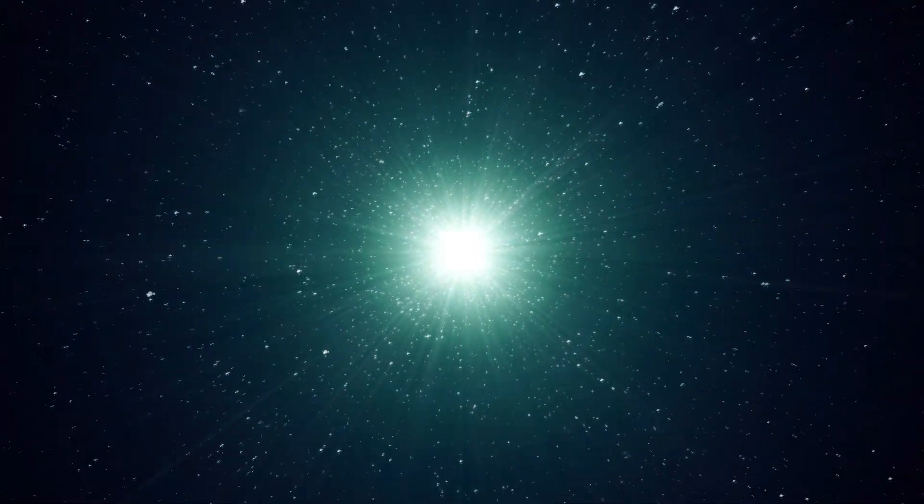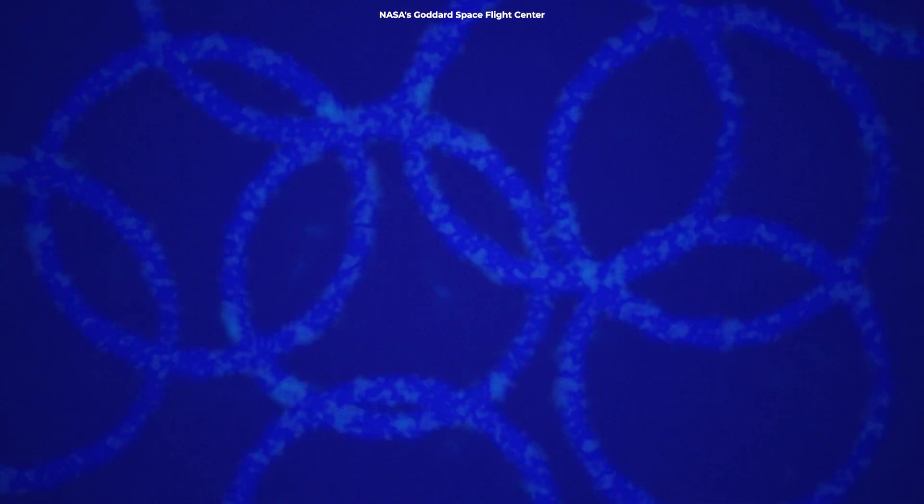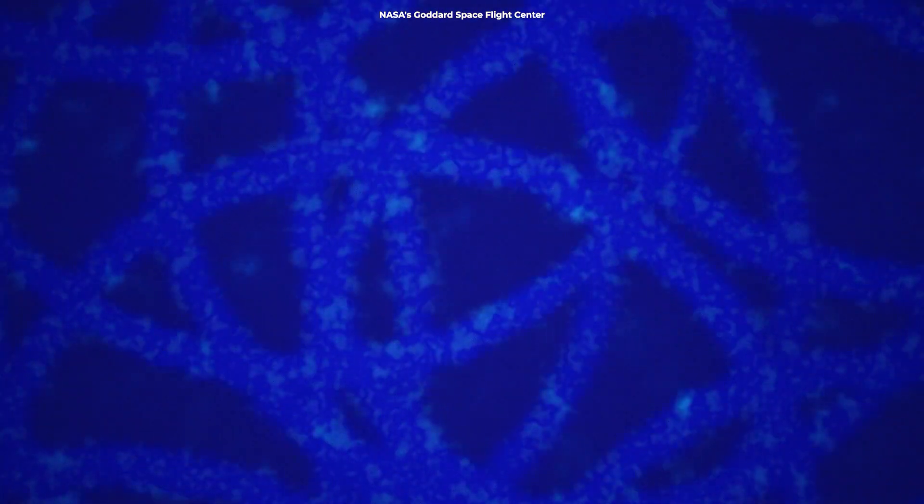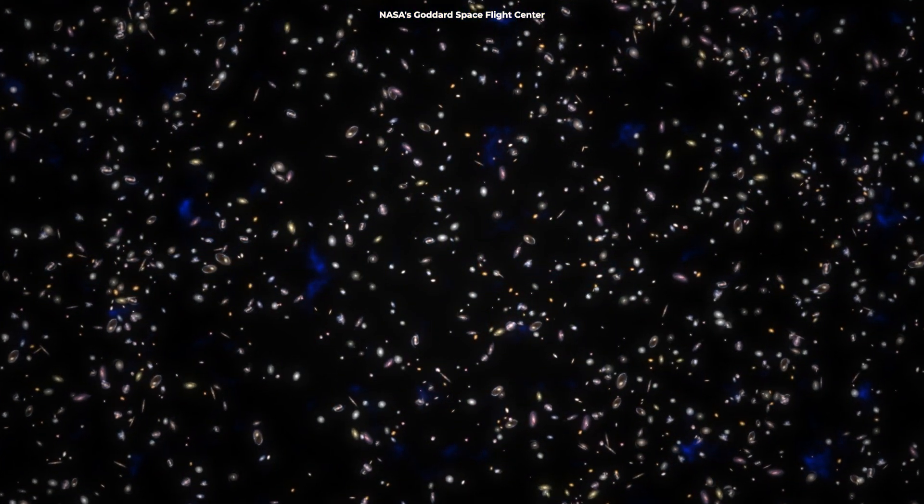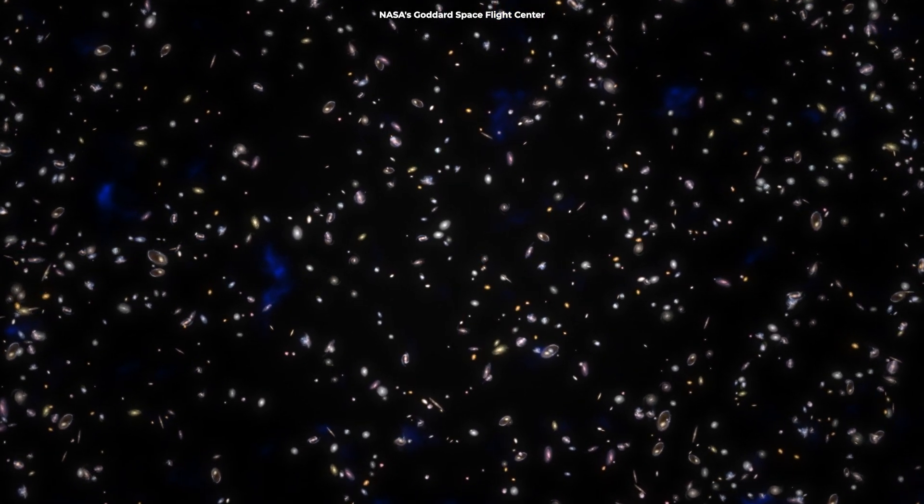Primordial black holes are thought to have formed just after the Big Bang, when the universe was in its earliest stages. Back then, the universe was chaotic, with huge density fluctuations. Some regions of space might have been so dense that they collapsed into these tiny, powerful black holes.